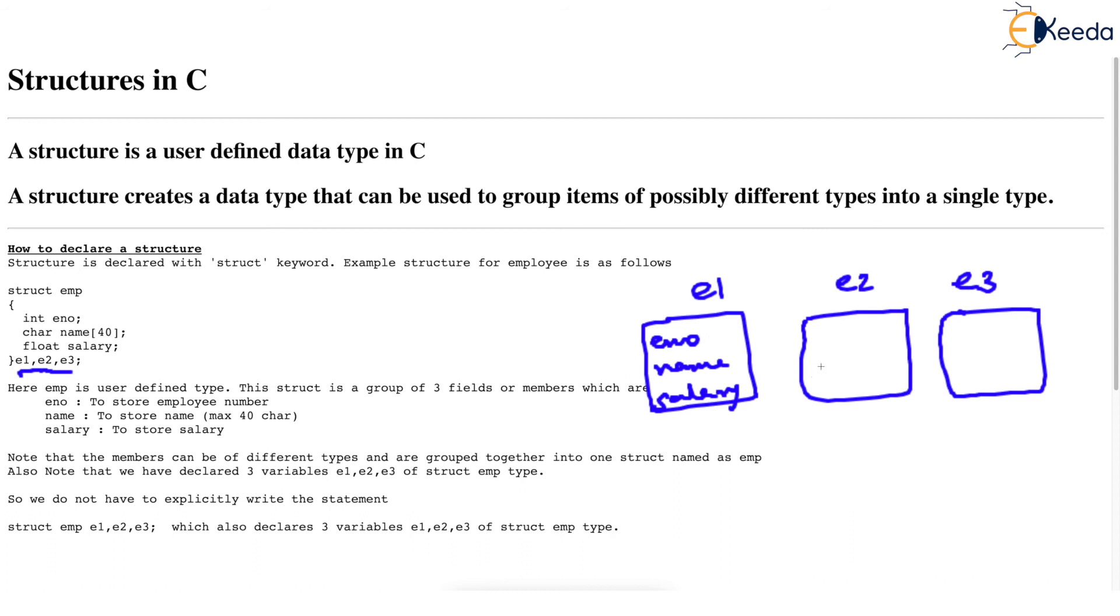And then how do you store, how do you access single member of some structure? Rule remains same. You have to write E2 dot salary. That is first you have to write the structure variable, then dot,